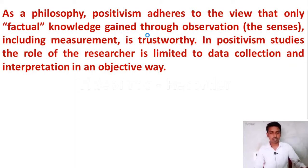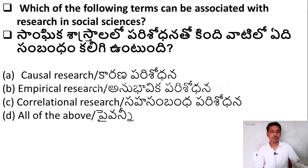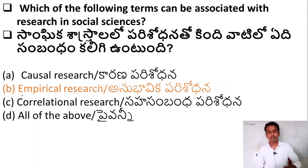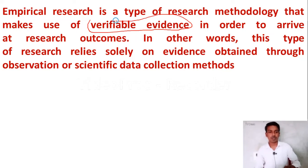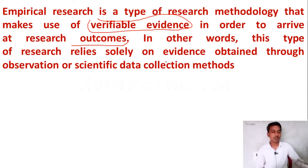Let us go to the next question: which of the following terms can be associated with research in social science? Option A — causal research; Option B — empirical research; Option C — correlational research; Option D — all of the above. The correct answer is Option B — empirical research is related to social science research. Empirical research is a type of research methodology that makes use of verifiable evidence to arrive at research outcomes. This type of research relies solely on evidence obtained through observation or data collection methods.